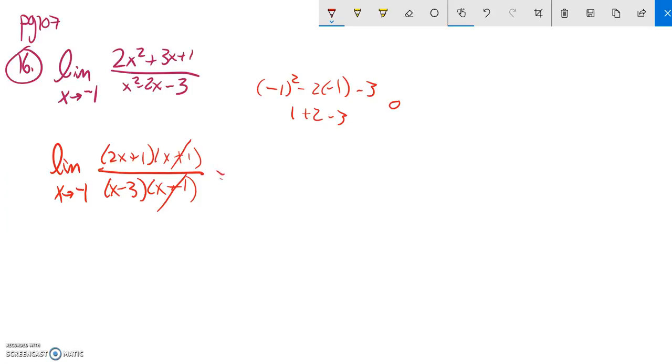So I'll just try direct substitution with what's left, just plug negative 1 into that. So 2 times negative 1 plus 1 divided by negative 1 minus 3, that's negative 2 plus 1 over negative 4. Negative 1 over negative 4, which is 1 fourth.